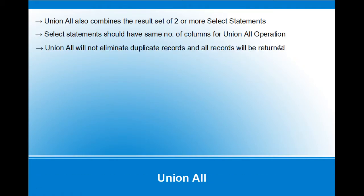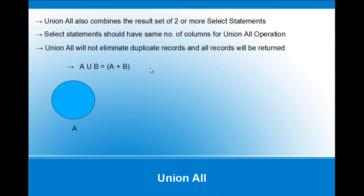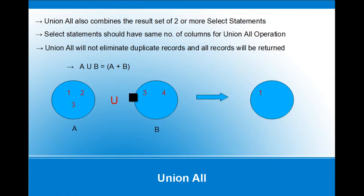UNION ALL will not eliminate duplicate records — all records will be returned from all the SELECT statements. So A UNION ALL B is simply A plus B. Here, table A has IDs 1, 2, and 3, and table B has IDs 3 and 4. In a UNION ALL operation, we get 1, 2, 3, and 4 — we are not removing any duplicate records. This is simply A plus B.